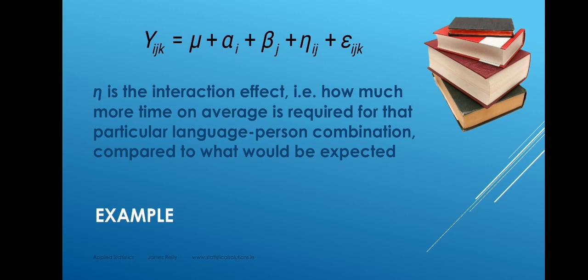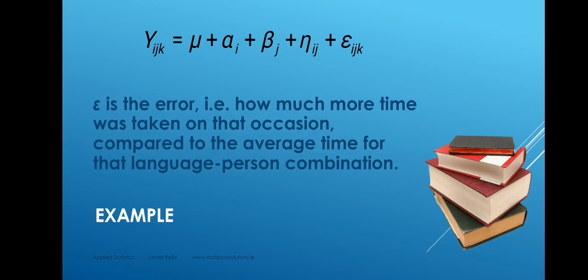Eta is the interaction effect: how much more time on average is required for that particular language-person combination compared to what would be expected — how much greater is the average reading time for a certain person reading in a certain language compared to what you would expect. Finally, epsilon is the error: how much more time was taken on a single occasion compared to the average time for that language-person combination.